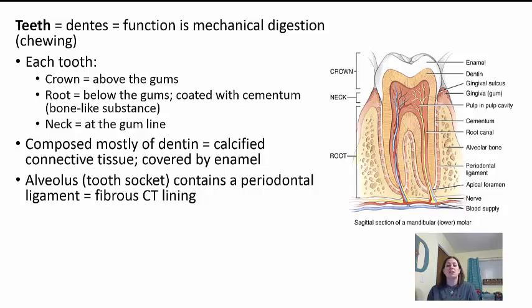A tooth is composed mostly of dentin, which is calcified connective tissue similar to bone. It is covered with enamel, which is stronger than bone. The problem with enamel is that it does not get replaced, so it can be worn off — especially by acidic foods. Your teeth are located in tooth sockets called the alveolus, containing a periodontal ligament — a fibrous connective tissue lining — which helps hold each tooth in place. These markings are found in the bones of the mandible and maxilla, which we discussed when we talked about bones in Anatomy 1.